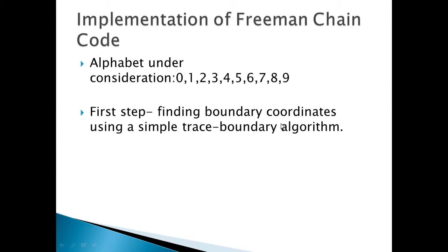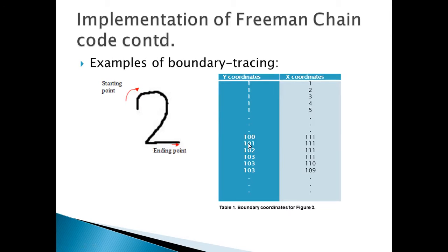Now let us come to the implementation part of our project. For the implementation, I have selected the alphabet 0 to 9. The first step is to compute the boundary of each symbol using a simple algorithm on MATLAB, which is based on the direction of the traced path of the contour, and it outputs the coordinates of each segment as a matrix of n by 2 — that is, it gives n coordinates for each boundary. As we can see here, this is my line drawing of the digit 2, and these are the coordinates which have been obtained using the code on MATLAB.